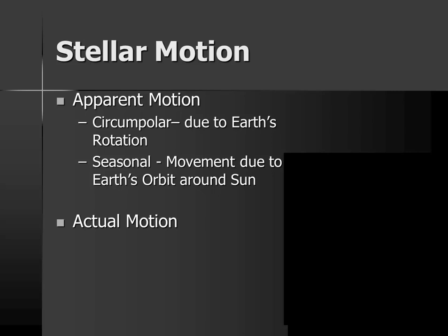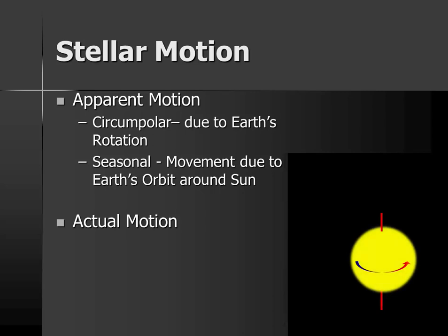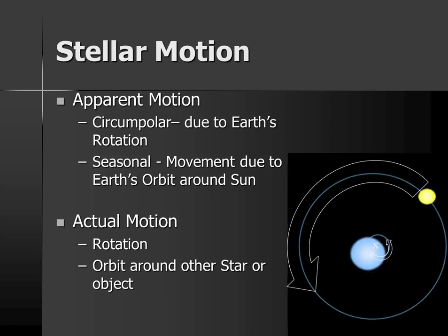But stars actually undergo their own motion. What are some common actual motions of stars? Stars may rotate as they spin about their axis. Stars may also, as we just discussed, orbit another star, or they may orbit other objects in space. Finally, there are some stars that are moving towards the Earth or away from the Earth. There are several different actual — sometimes referred to as proper — motions of stars, as opposed to the apparent motion caused by our moving perspective.